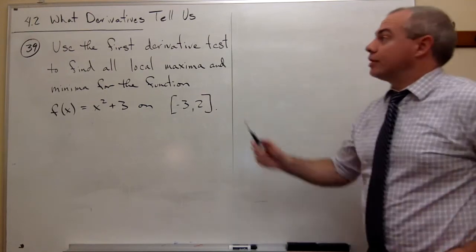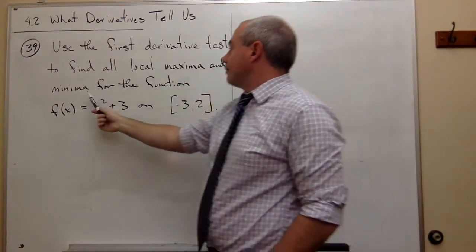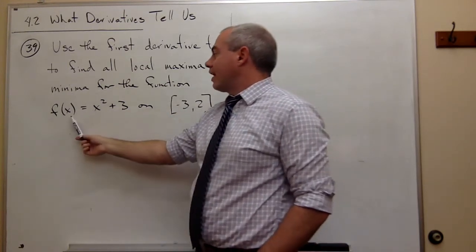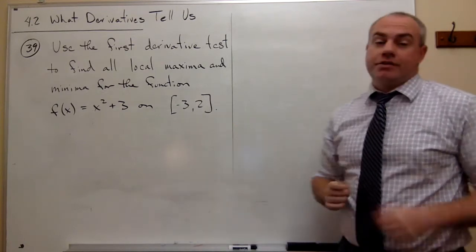In number 39, we want to use the first derivative test to find all local maxima and minima for the function f(x) = x² + 3 on the interval from -3 to 2.